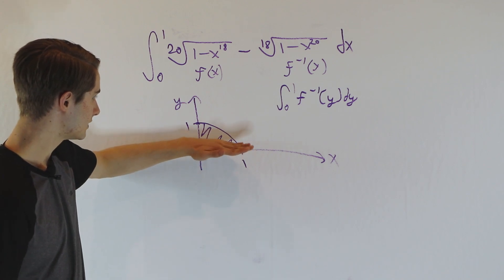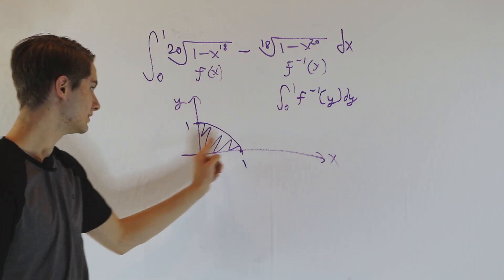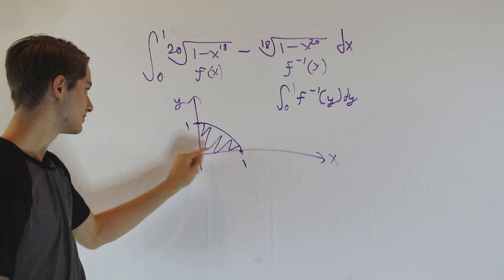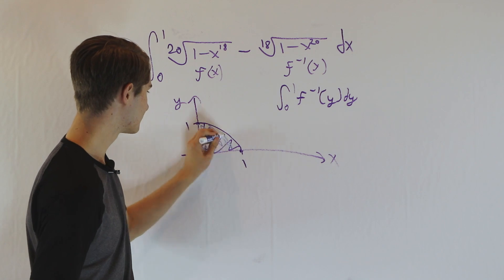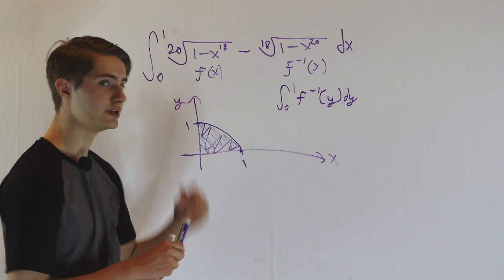As it goes up, we're taking f inverse of y, the x value, tracing out this curve and finding the area. Doing this area is giving us the same shape as doing the other area.